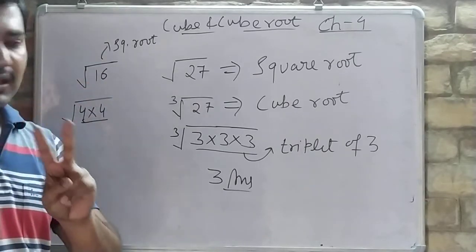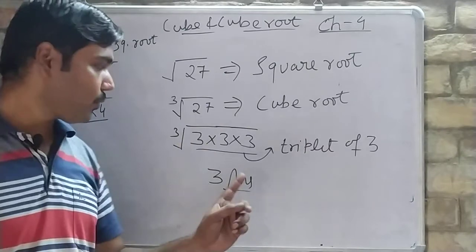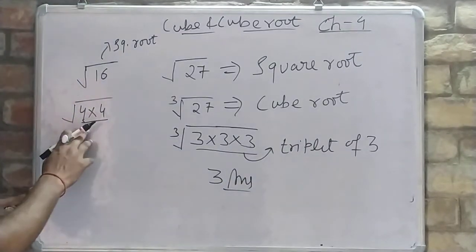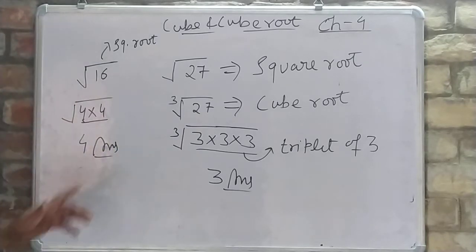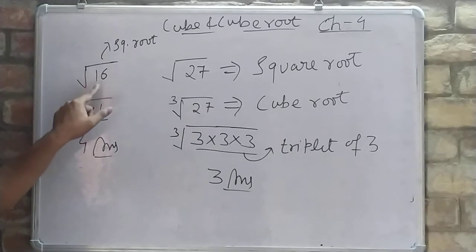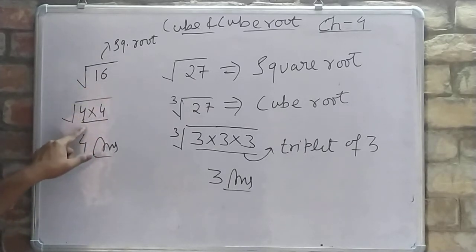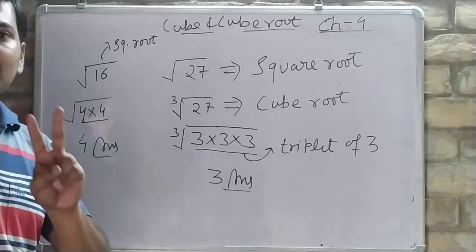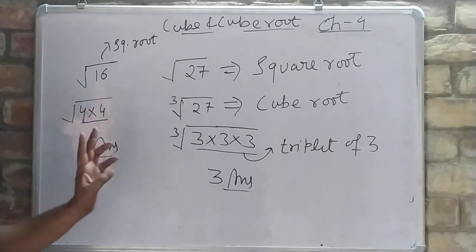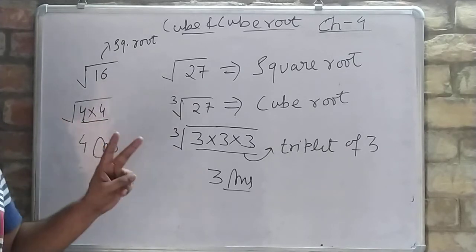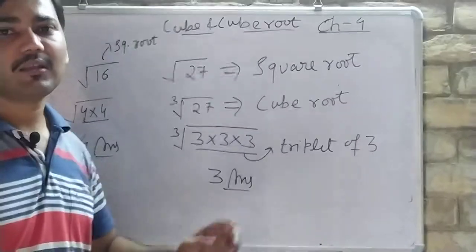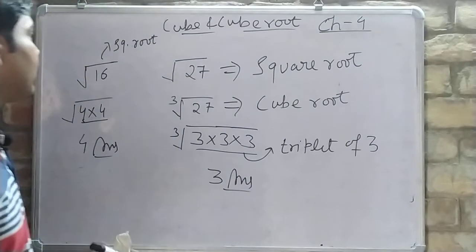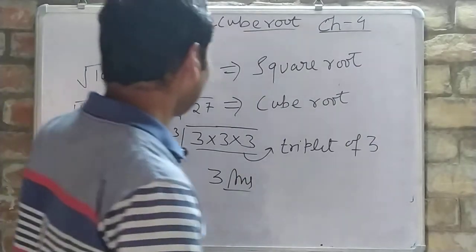In square root we form a group of 2, and in cube root we form a group of 3. Here we are seeing a group of 2, so 4 comes outside the square root — that is how square root of 16 is solved.